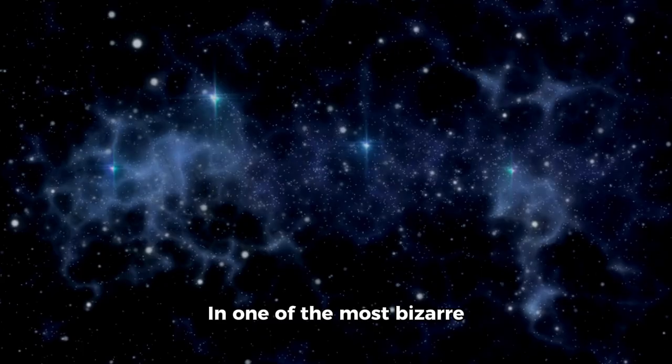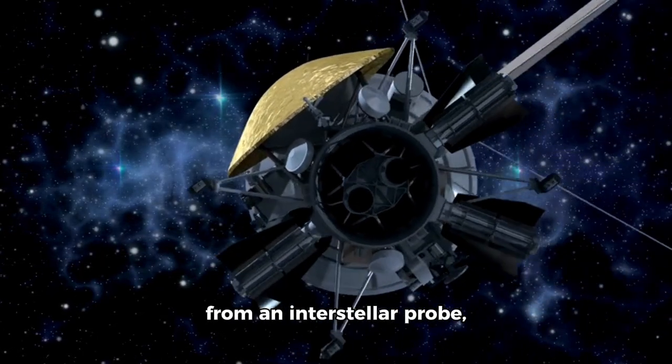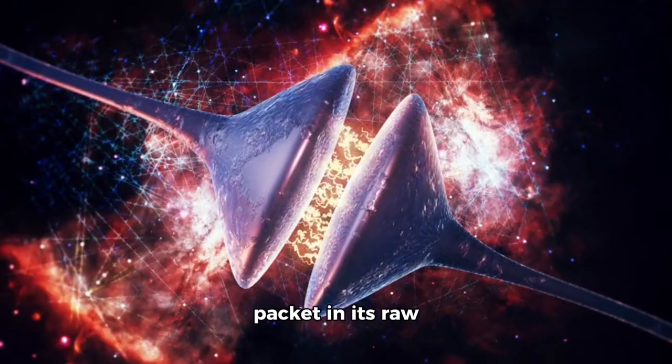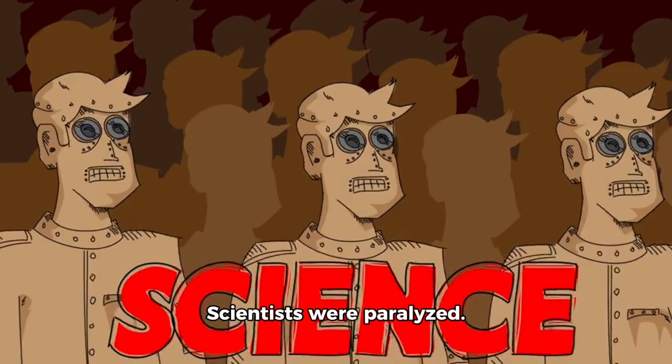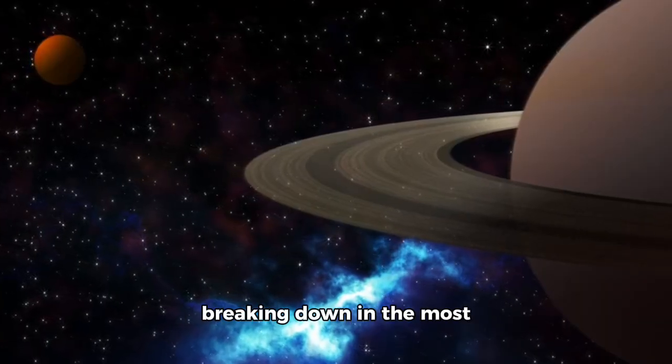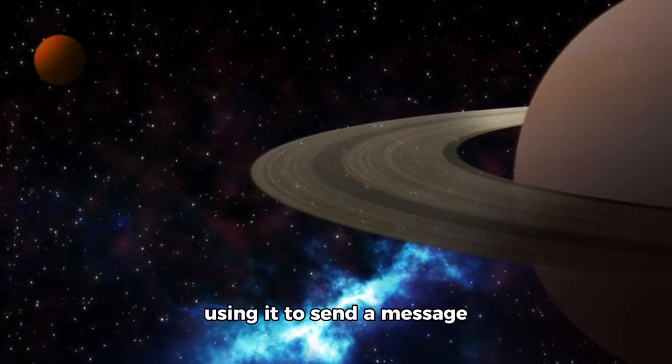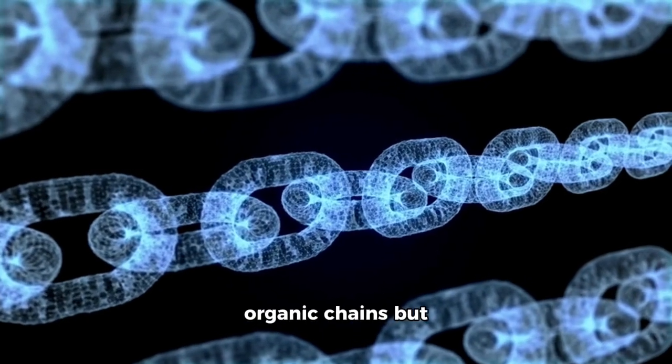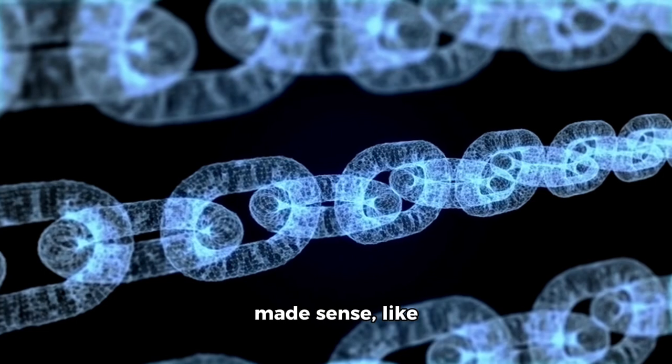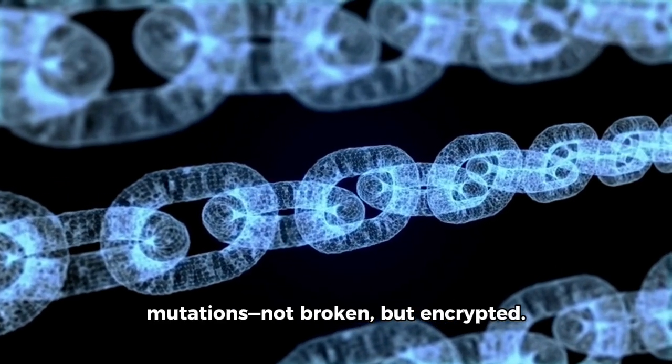In one of the most bizarre transmissions ever received from an interstellar probe, Voyager's low-gain antenna emitted a binary code packet—in its raw form, thousands of lines. Initially dismissed as a glitch or interference from cosmic rays, the signal was passed to AI decoding algorithms, which revealed something staggering: embedded fractal symmetry, base-four sequencing, and repeating motifs that mirrored the double helix structure of DNA. Scientists were paralyzed. Either Voyager was breaking down in the most organized meltdown ever seen, or something was using it to send a message in biology's language. There were sequences of codons but no protein output. Patterns mimicked organic chains but contained mistakes that made sense, like deliberate mutations—not broken but encrypted.